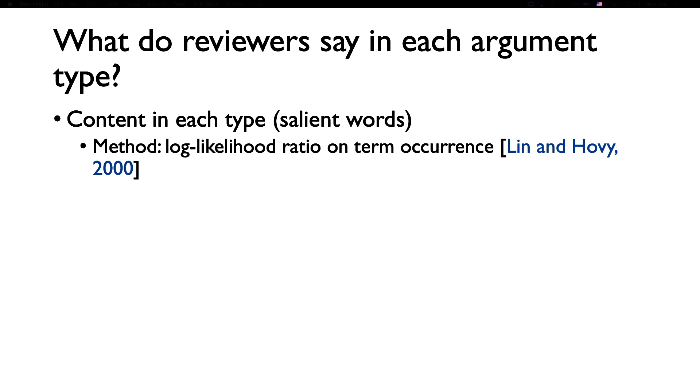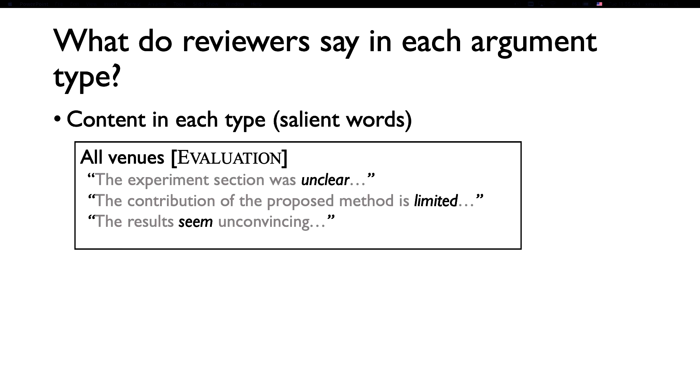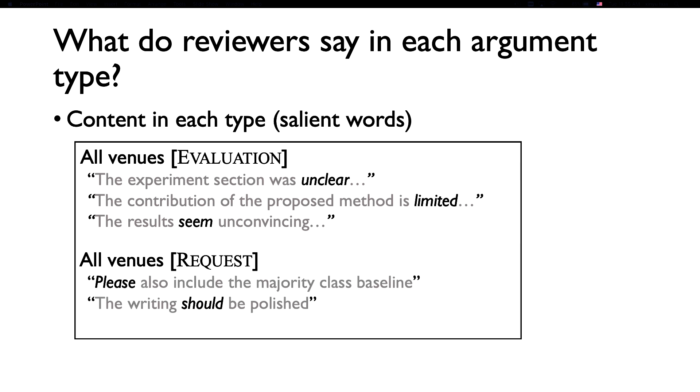Finally, we would be curious to know what kind of content reviewers are talking about for these types. Are they different in the communities? To do this, we utilize the log likelihood ratio test on unigram term occurrence. These tests essentially give us the salient words for a given document compared with the background corpus. For all the conferences, we see that the typical evaluation argument looks like this. The experiments section was unclear. The contribution of the proposed method is limited. The results seem unconvincing.